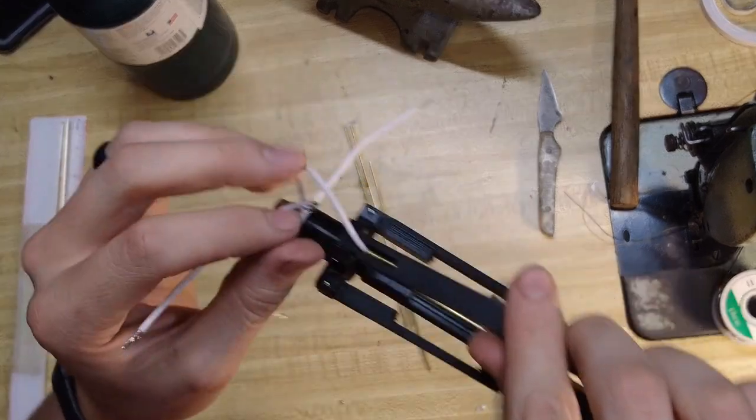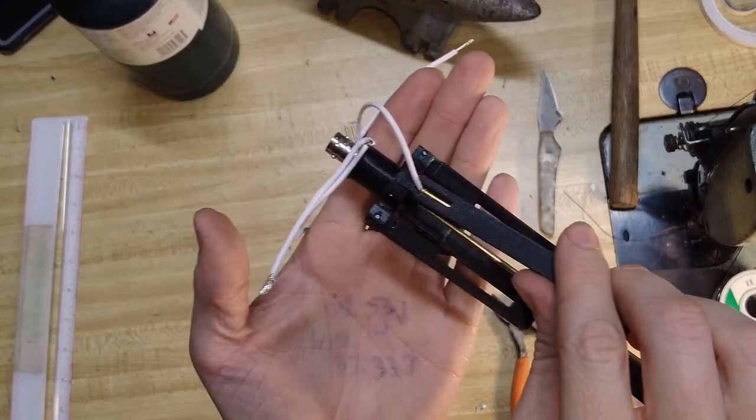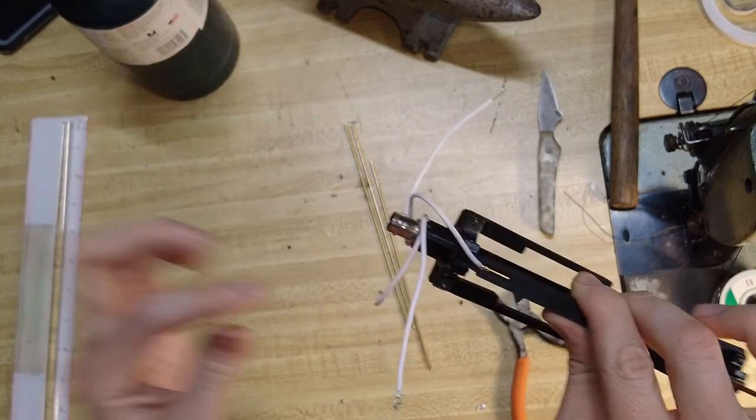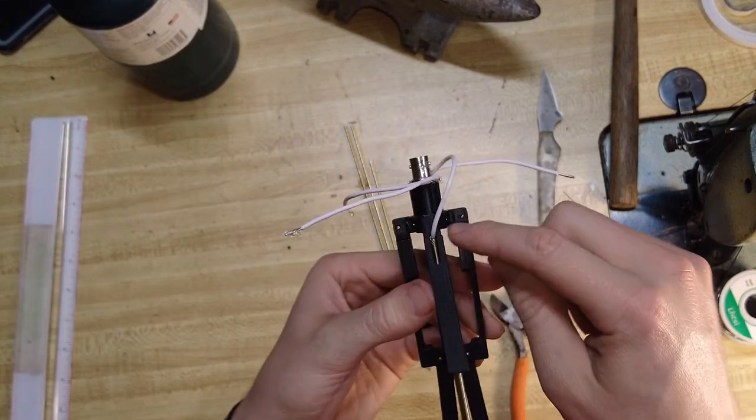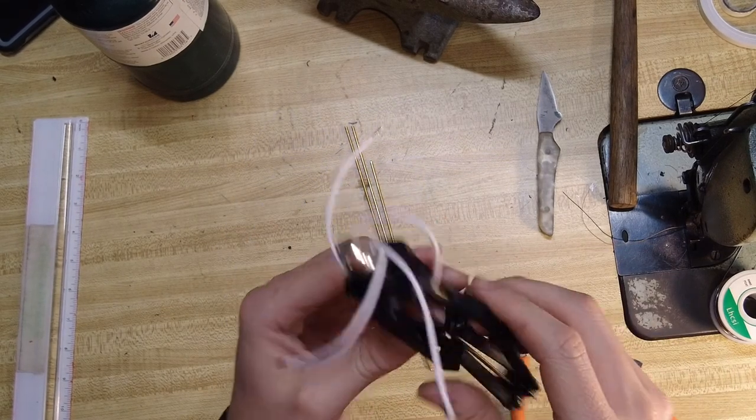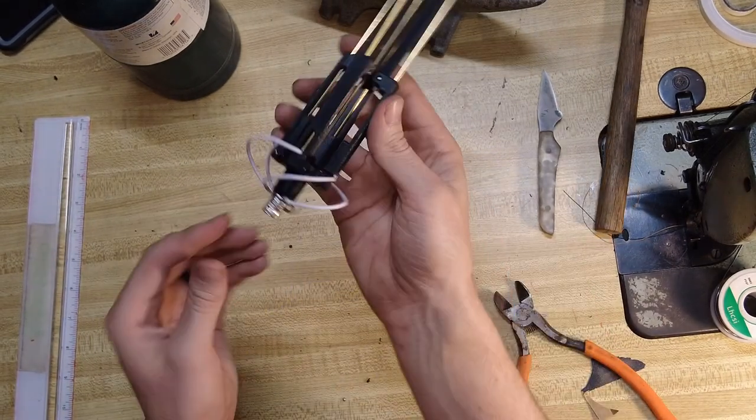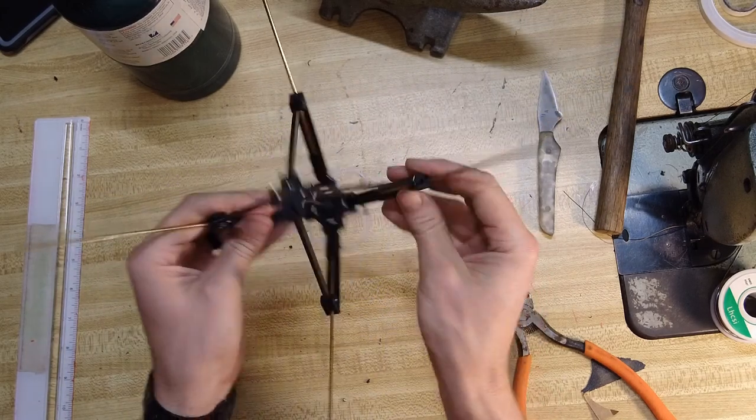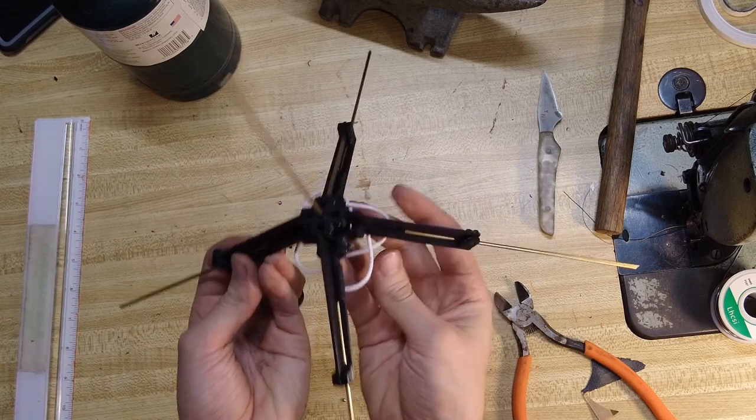So you can see right there we pinch the end of the wire down really well and it's all covered up and it's in there really tight. From here you can go and you can lay a little bit of glue or something down in there just to make sure that nothing goes anywhere. And there we go here's your antenna. Pulls down nice and easy.